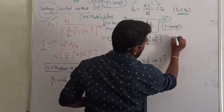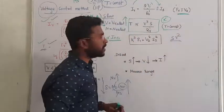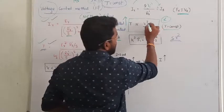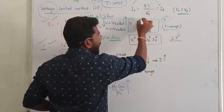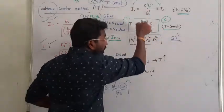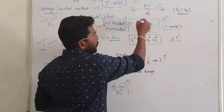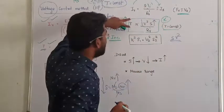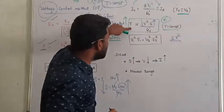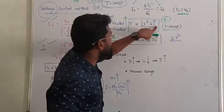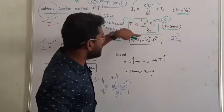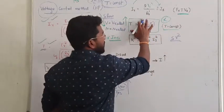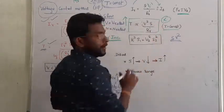So looking at the equation T ∝ V²·S / R': the variable parameters are slip S and voltage V. Since we are trying to reduce the voltage to control the speed, if we reduce the voltage, the slip value will increase in order to keep the torque constant. That is the key relationship between voltage and slip.